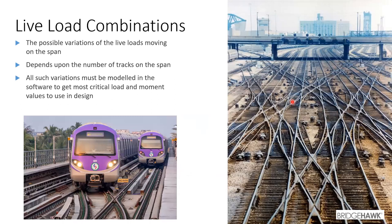Live load is one thing, but the combination of live loads is completely different. The possible variation of live loads moving on the span is entirely dependent on the number of tracks you're dealing with. In Bombay, Pune, or Delhi there are metro lines with four tracks, but for most you'll have two tracks. You have to accurately indicate all these values in your combination table.